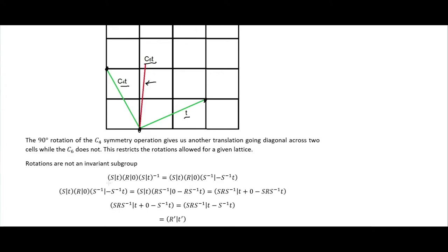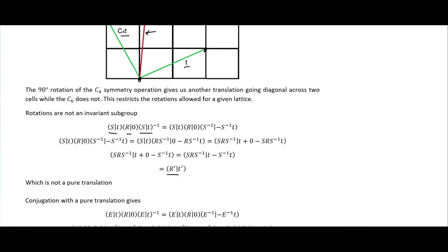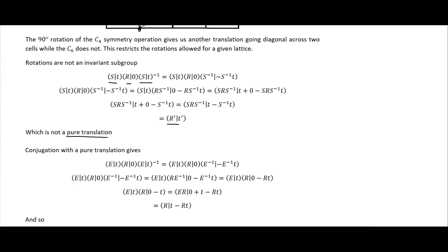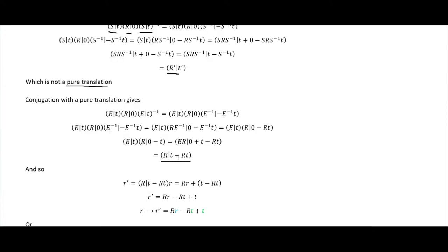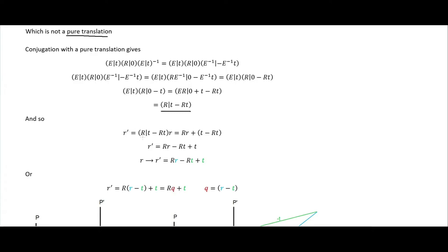Rotations are not an invariant subgroup. If we take the conjugate of a rotation, we end up with a rotation and a translation — not a pure translation. Conjugation with a pure translation gives us R plus T minus the rotated translation. So R prime equals (R | T - R*T) acting on R, which groups together as R acting on (R minus T) plus T.